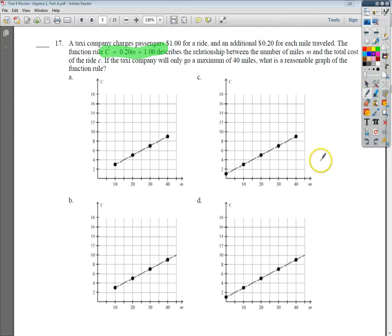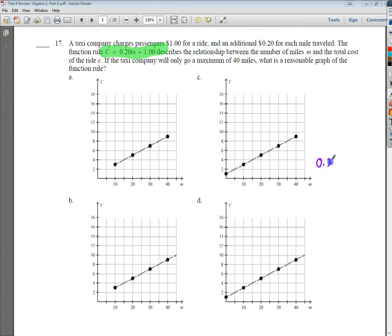So I'm going to take my equation, 0.20M, and I'm going to plug in 10, and plus $1. By the way, multiplying by 0.2, which is 1 fifth, is the same as dividing by 5. So I know that 10 divided by 5 is 2. So 2 plus 1 equals 3. So when I plug in 10 miles I should get $3.